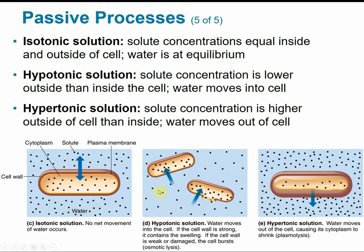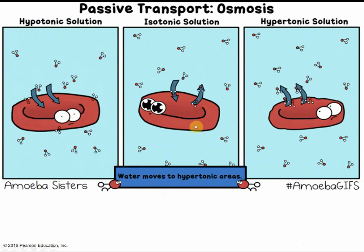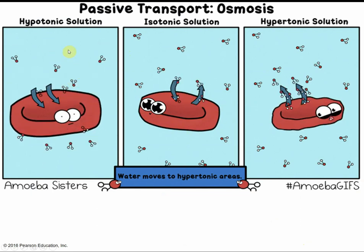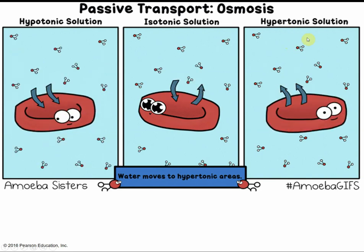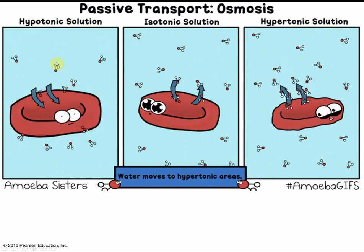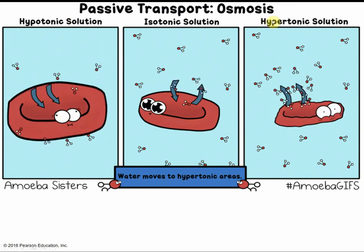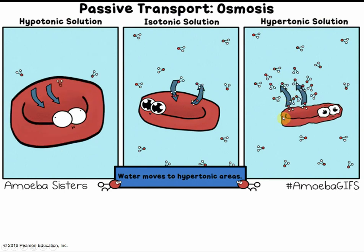In a hypertonic solution — hyper meaning above normal — the solute concentration in the solution is higher than inside the cell. Water wants to reach equilibrium, so it moves out of the cell to dilute those concentrated solutions. The cell will shrink or crenate and die, which is called plasmolysis. To summarize: isotonic — the cell is happy, no net movement. Hypotonic — water moves inside the cell. Hypertonic — water leaves the cell. Hypotonic is more dilute than inside the cell; hypertonic is more concentrated than inside the cell.